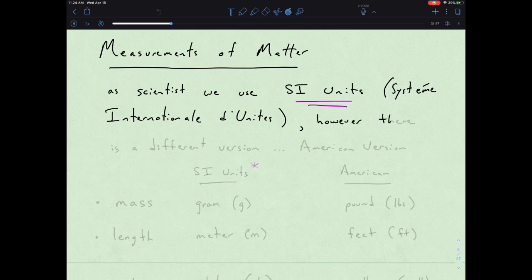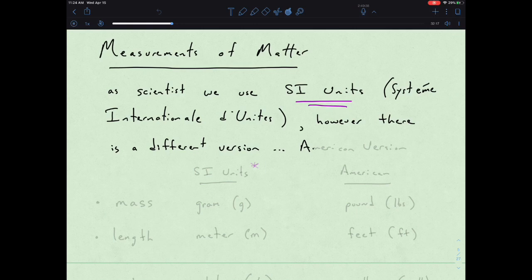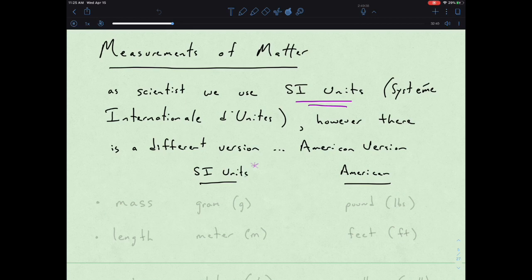However, there is a different version — what I would call the American version. But we tend to be in our SI units. So just to kind of break that down, we can compare SI units to American-style units. But keep in mind that going forward, we're really interested in SI units. Since there are two conventions, we need to be able to go between both of them.